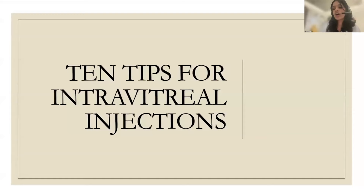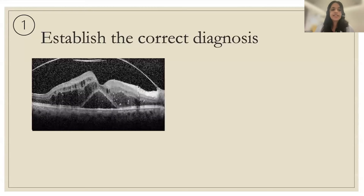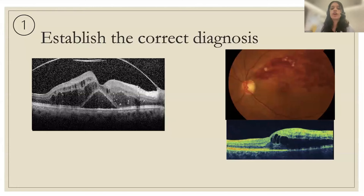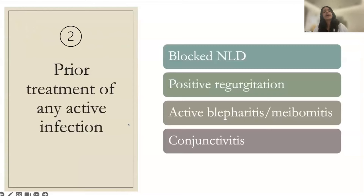Now covering 10 tips for intravitreal injections. Tip one: establish the correct diagnosis. Whether treating diabetic macular edema with subretinal fluid, branch retinal vein occlusion with macular edema, or neovascular AMD, confirm that the injection is indicated for this specific patient, review their history of prior response, and establish the correct diagnosis before proceeding.